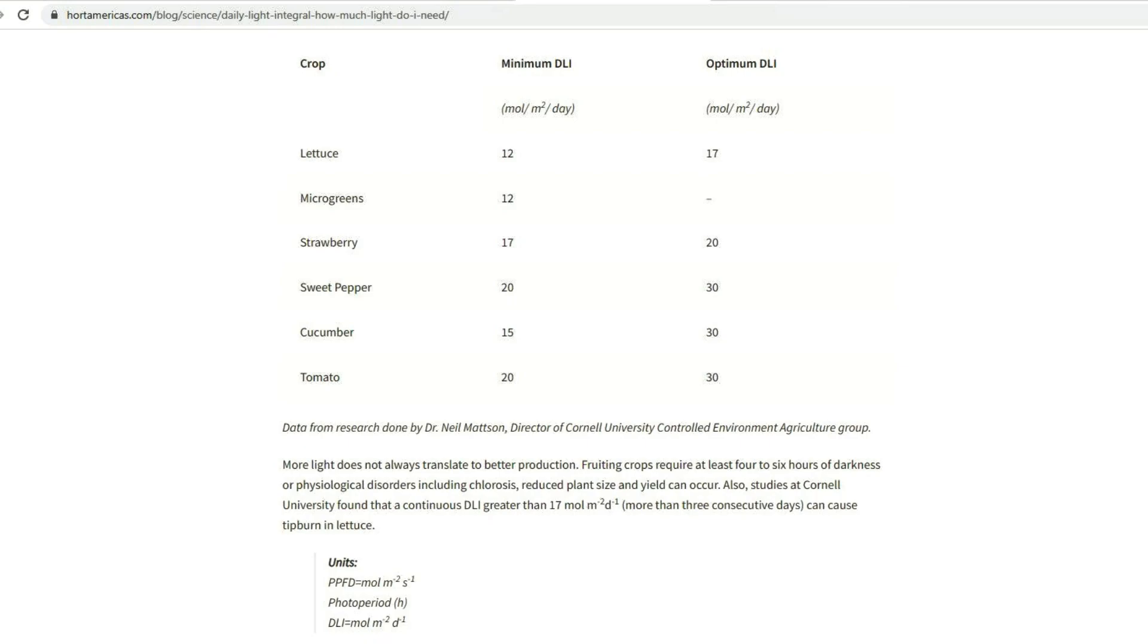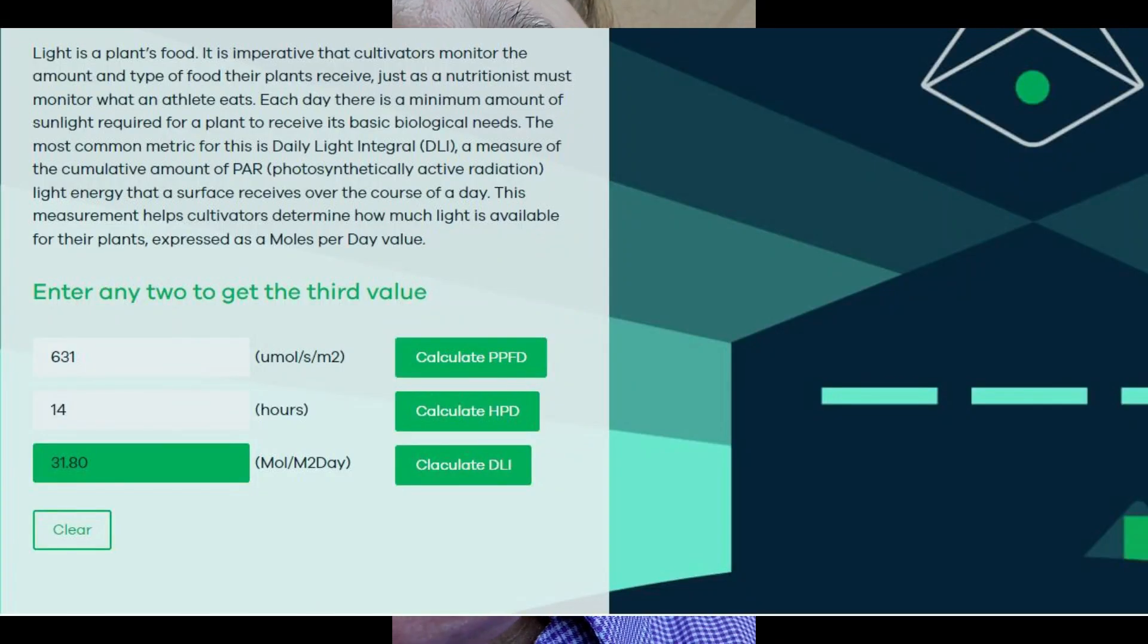I could probably diminish the hours. That's another benefit of using the calculators that you can save money by not spending more than you have to to light your grow.